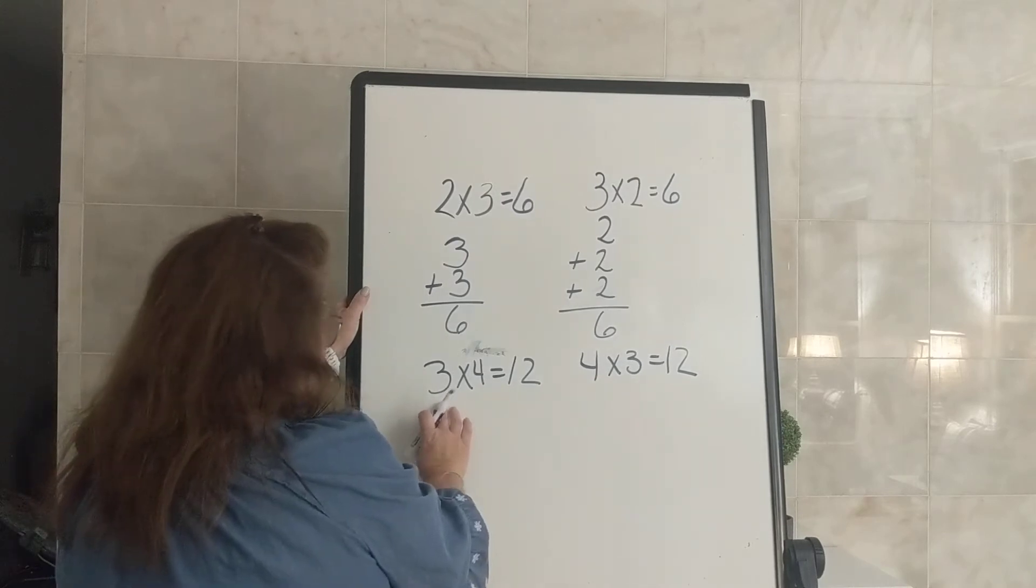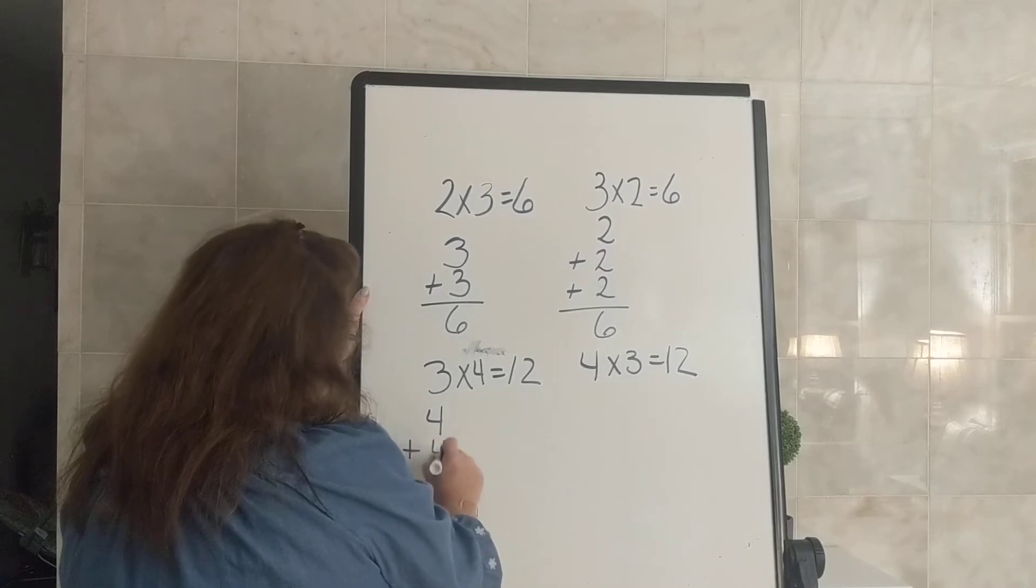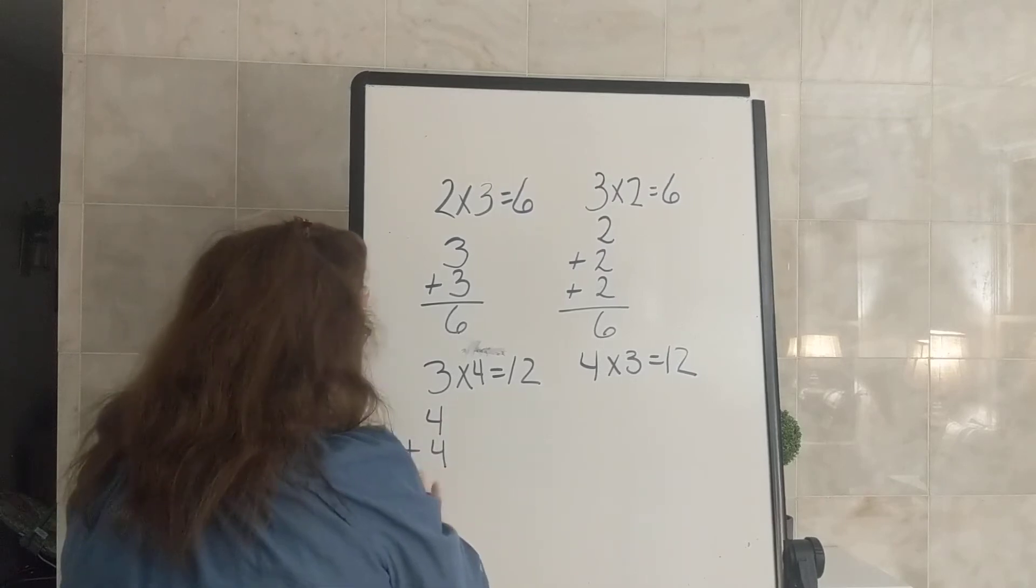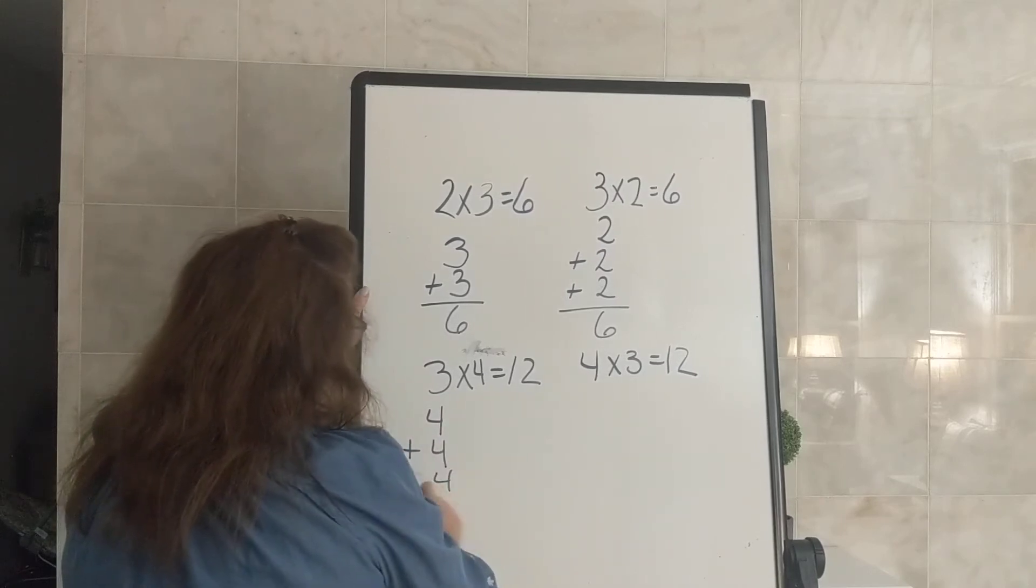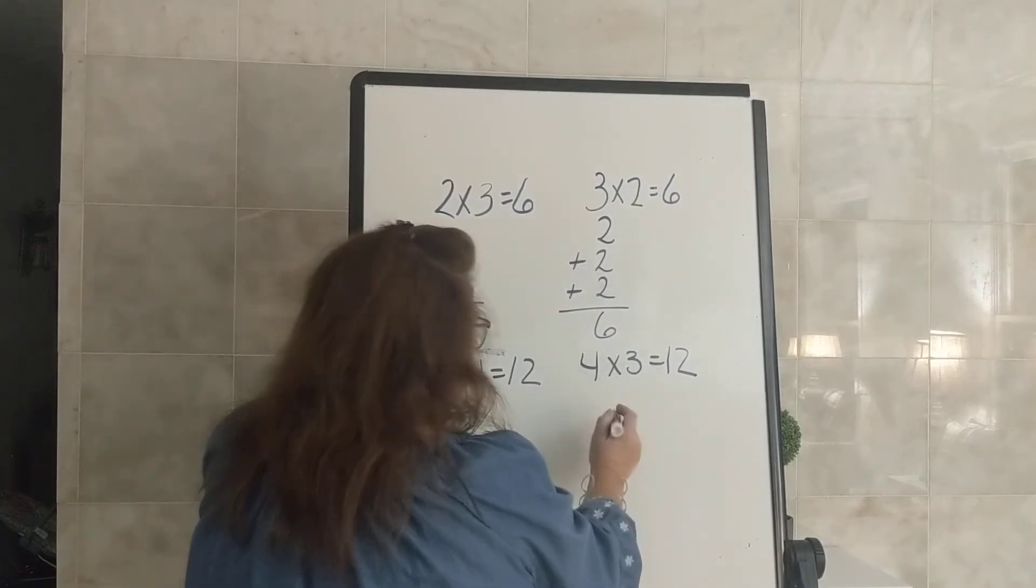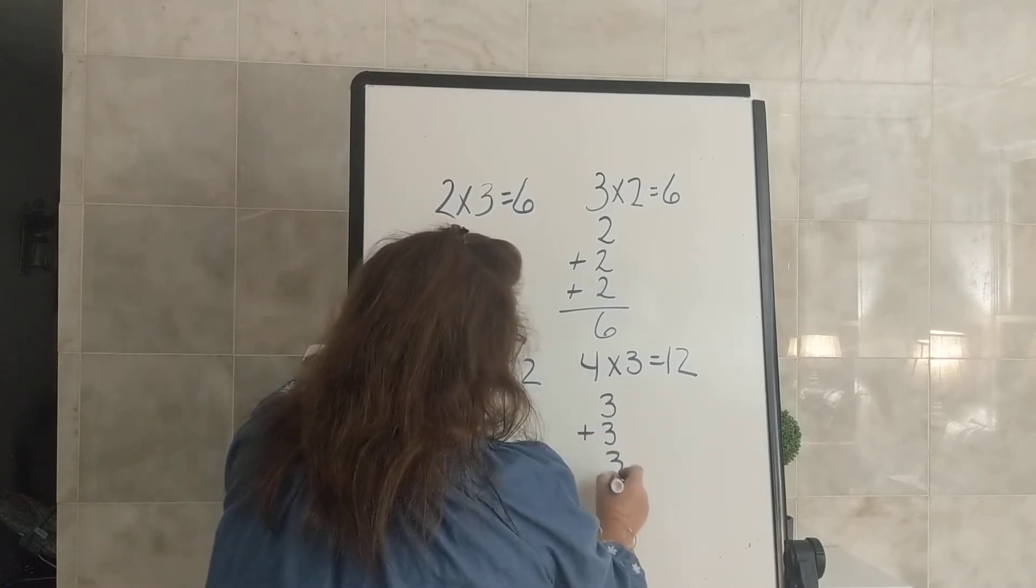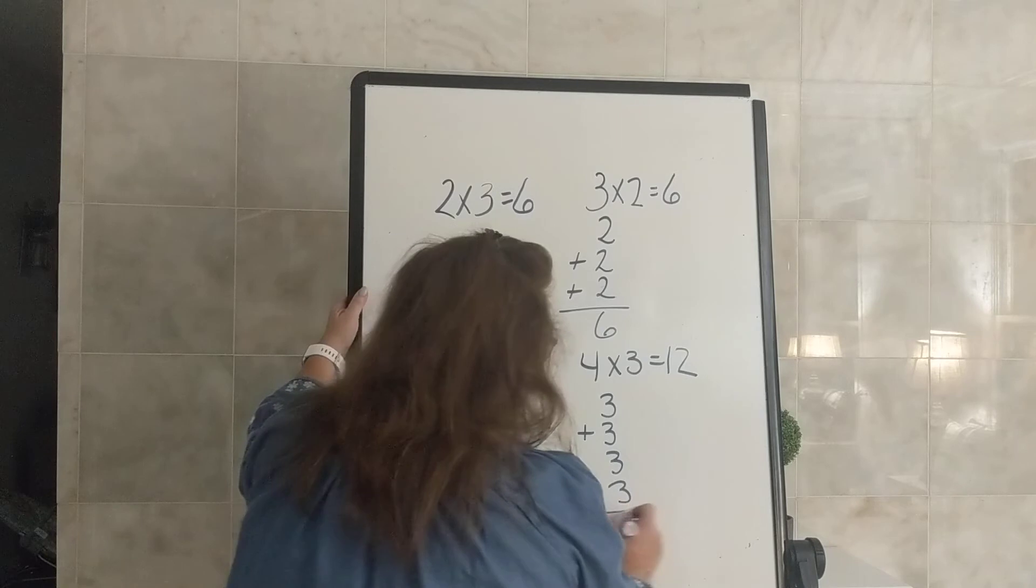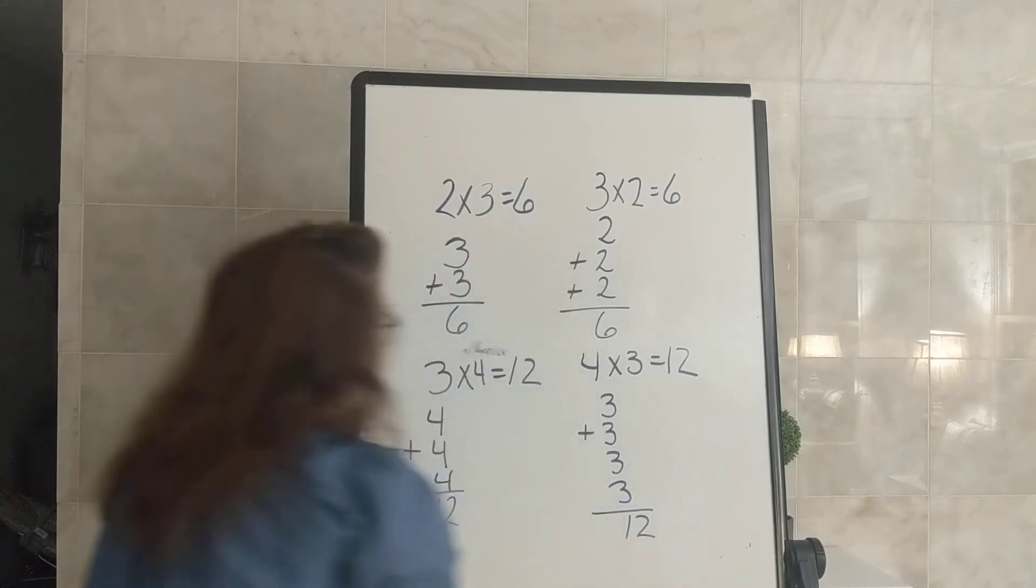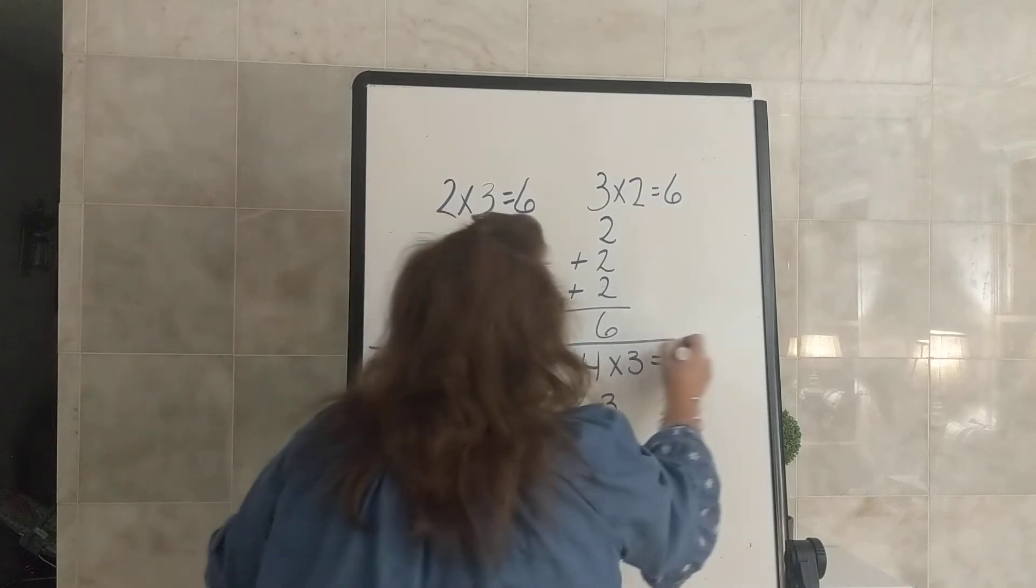Now we can come over here and we can add 4 three times, 4 plus 4 plus 4 equals 12. Or we can add 3 four times, 3 plus 3 plus 3 plus 3 equals 12.